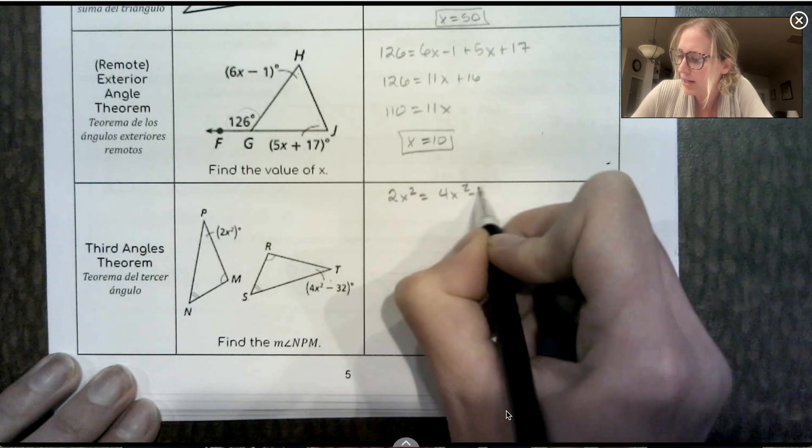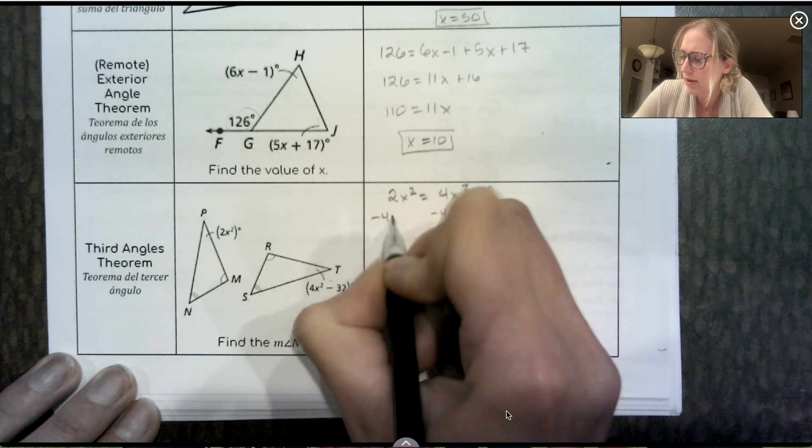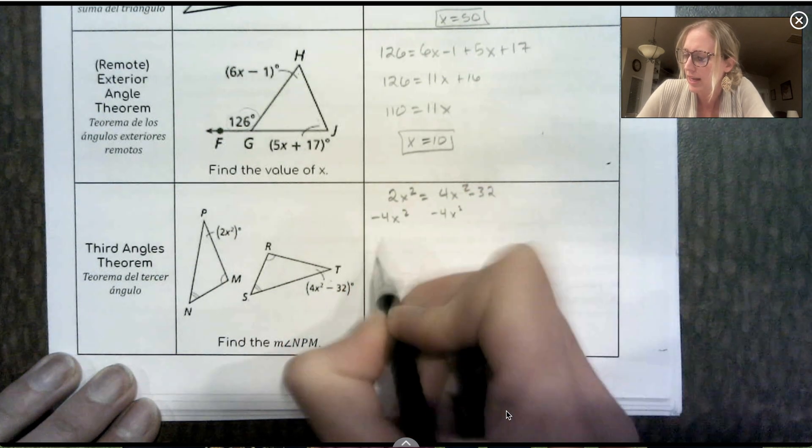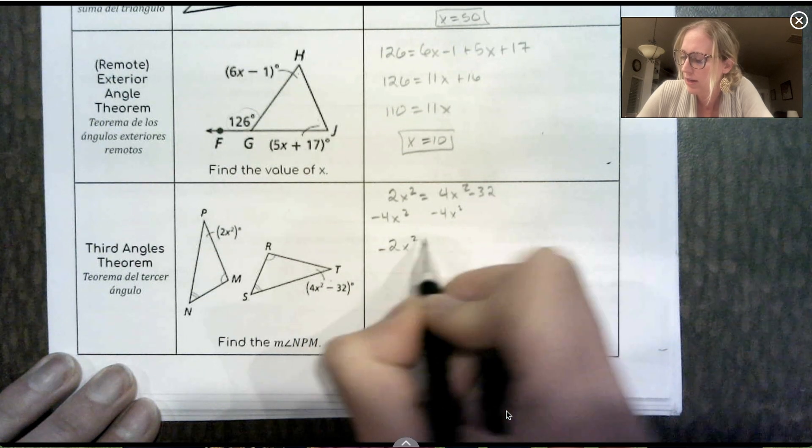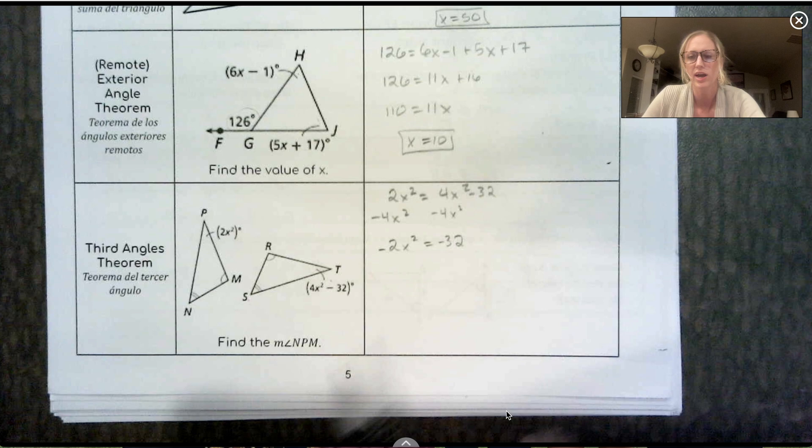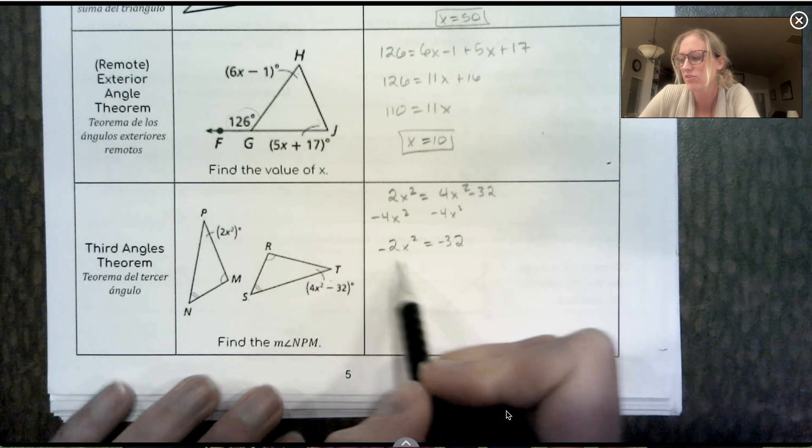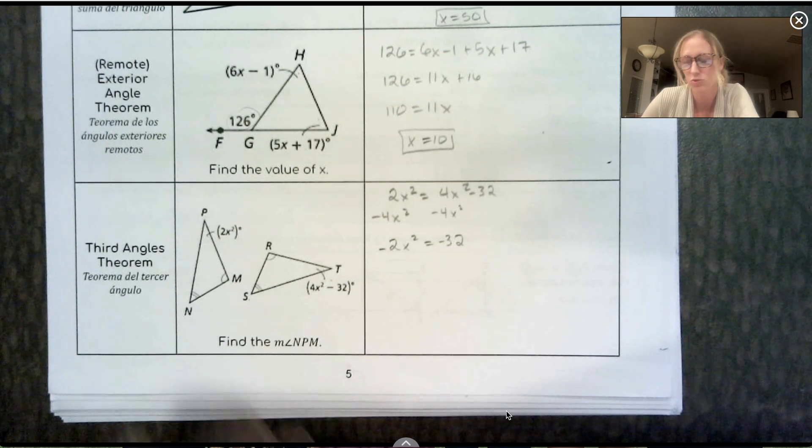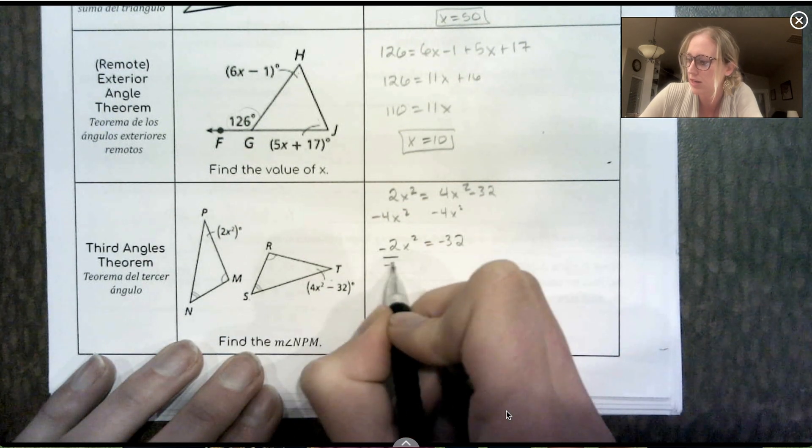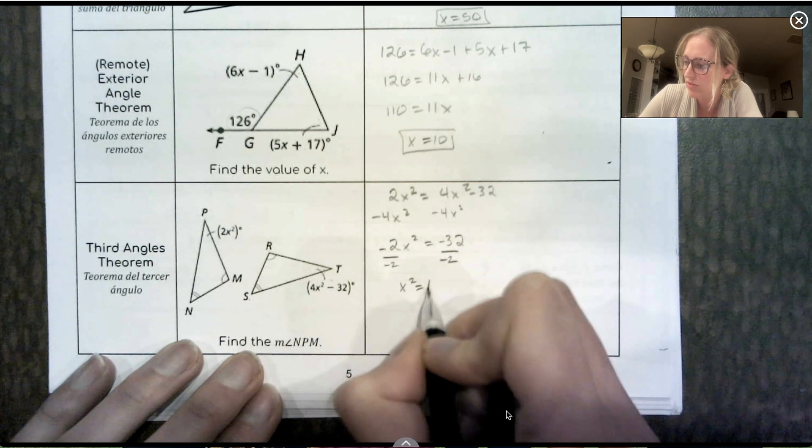So I want to get my x squareds together. So I'm going to subtract 4x squared. So I get negative 2x squared equals negative 32. Now I don't need to set this equal to zero because I don't have an x squared and an x where I normally factor. In this case, I can actually just get x squared by itself and then take the square root. So I'm going to divide both sides by negative 2. So I've got x squared equals positive 16.